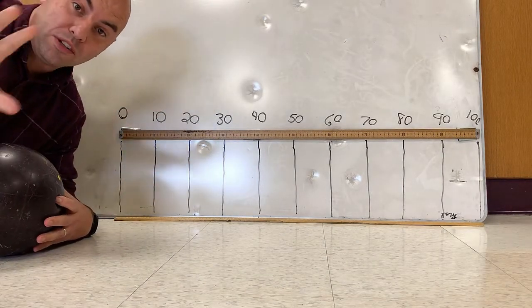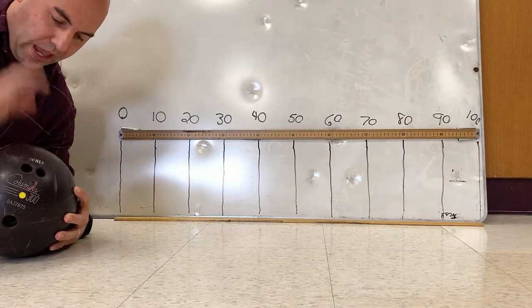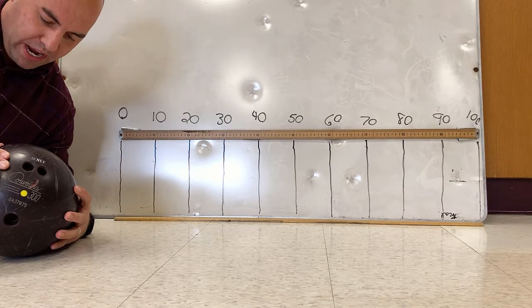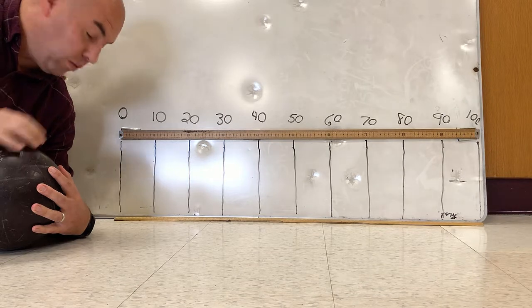All right gang, so I want to introduce you to somebody. This is Renee the bowling ball, and we're going to take good old Renee here and roll her along the ground.